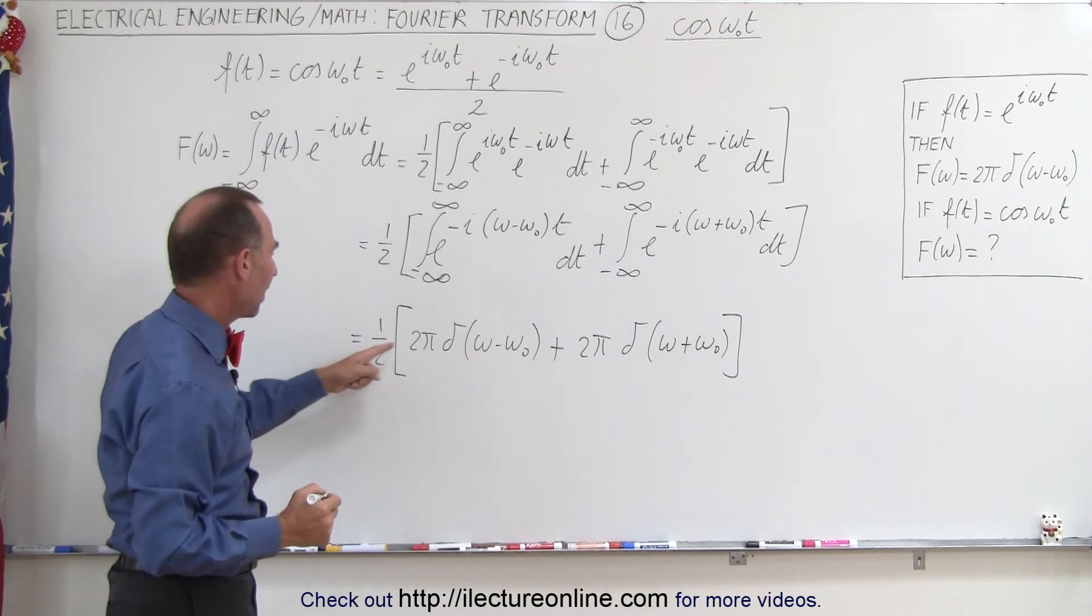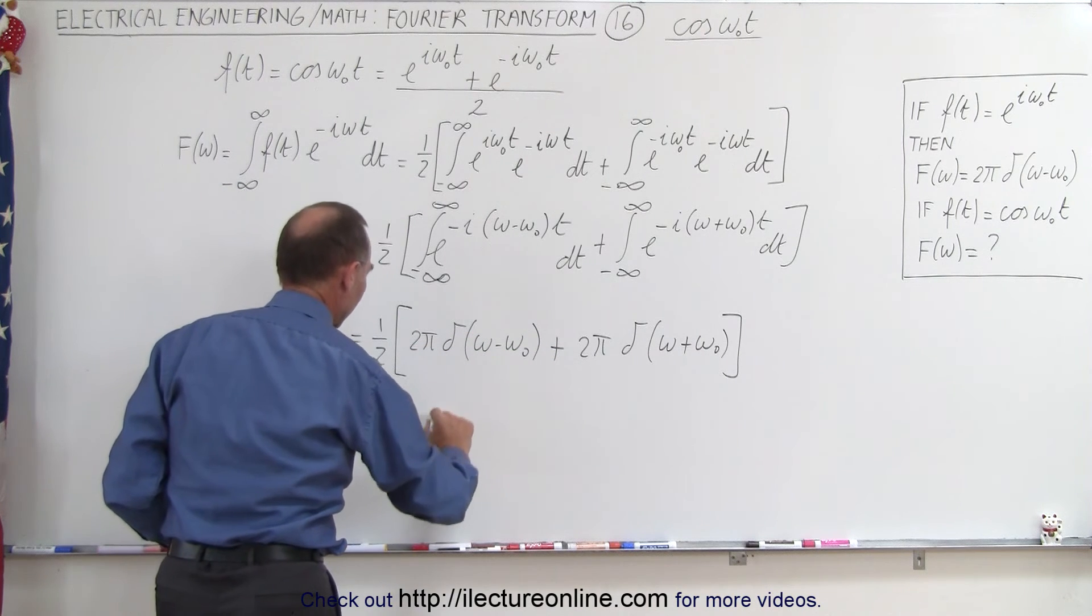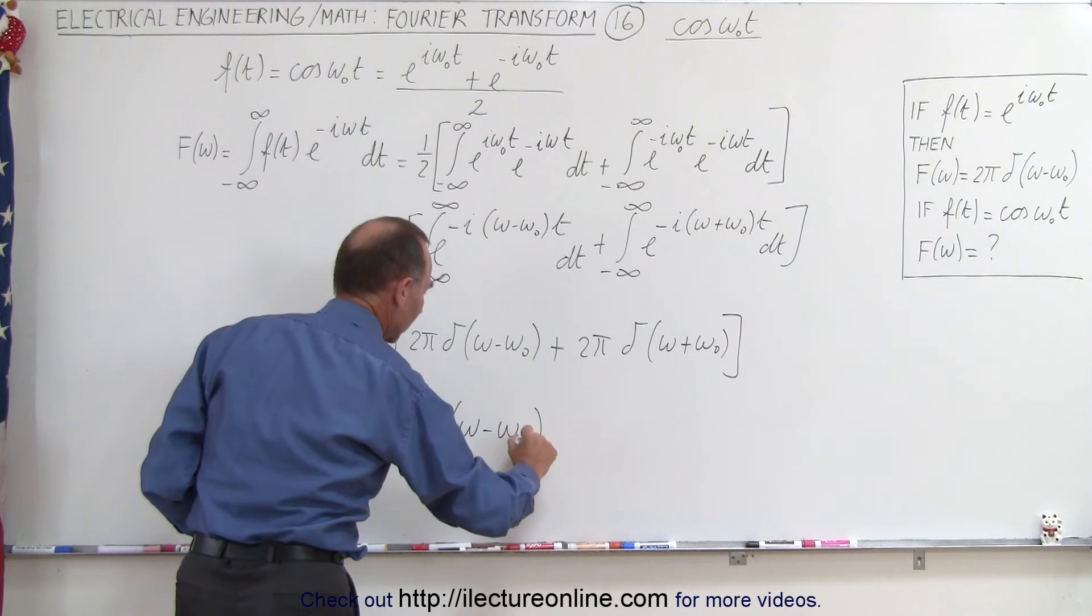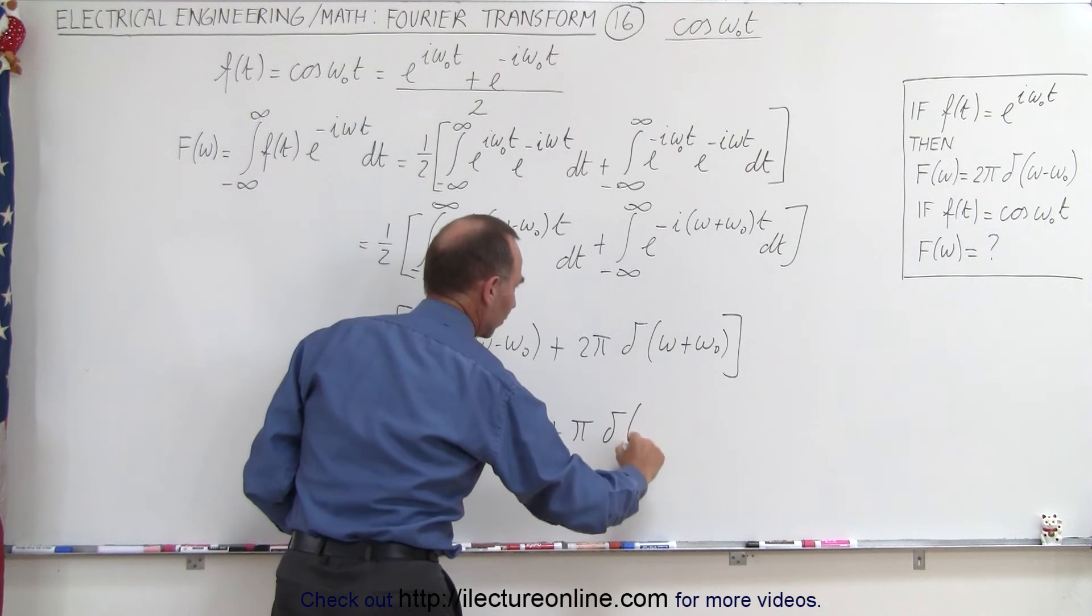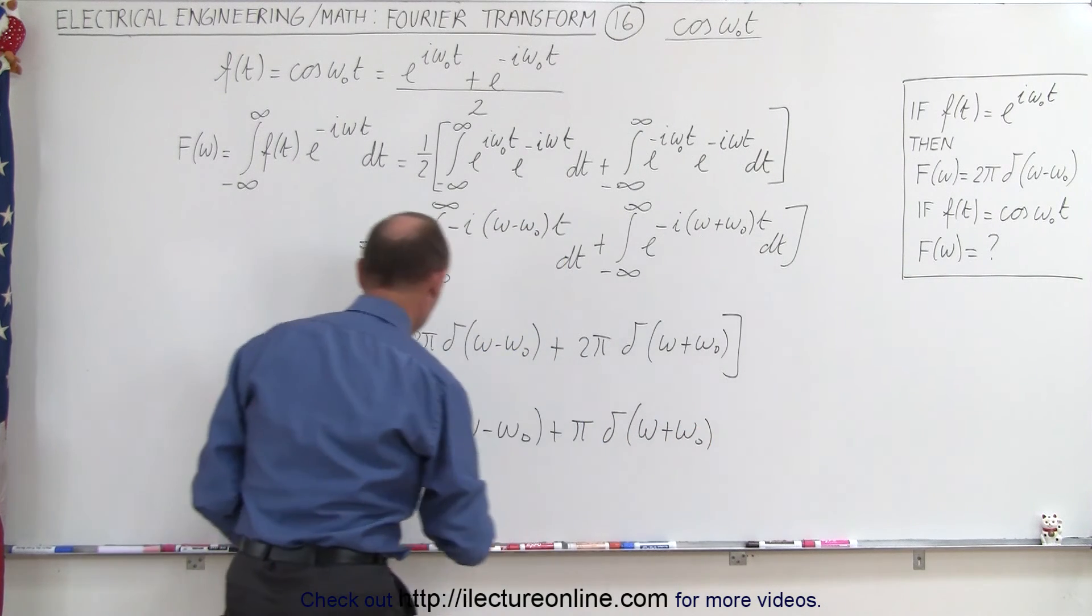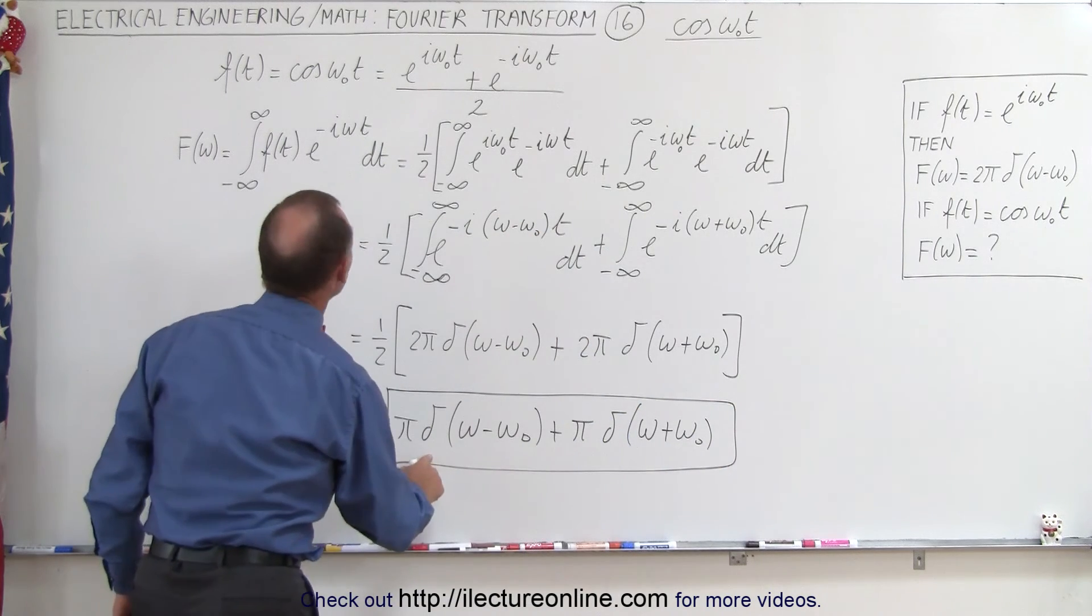Taking the one-half and multiplying through, this becomes π·δ(ω - ω₀) + π·δ(ω + ω₀). This is the Fourier transform in the frequency domain when the input in the time domain is cos(ωt).